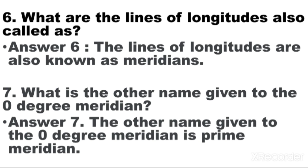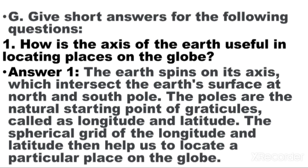Question number 6: What are the lines of longitudes also called? Answer: The lines of longitudes are also known as meridians. Question number 7: What is the other name given to the 0 degree meridian? Answer: The other name given to the 0 degree meridian is Prime Meridian. Give short answers. How is the axis of the Earth useful in locating places on the globe? Answer: The Earth spins on its axis, which intersects the Earth's surface at the North and South Pole. The poles are the natural starting point of gradicals, called longitudes and latitudes. The spherical grid of longitude and latitude then helps us to locate a particular place on the globe.